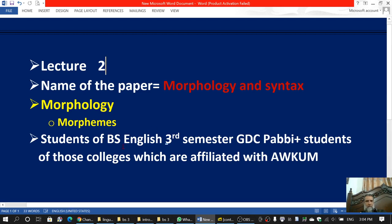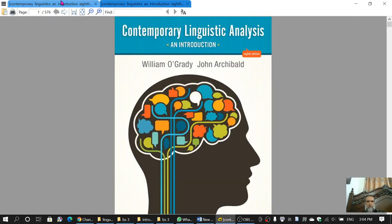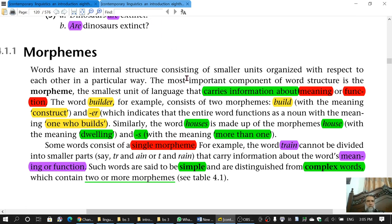This lecture is specifically for the students of BS third semester GDC-Pabi and also for the students of those colleges which are affiliated with Abdul Wali Khan University. The topic is Morphemes and it is lecture number two from this book Contemporary Linguistic Analysis and Introduction by William O'Grady and John Archibald. These are the two editors.